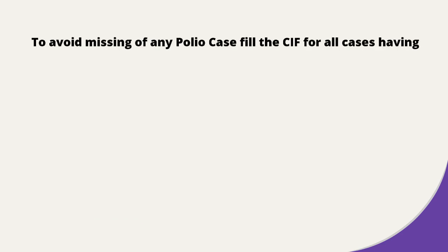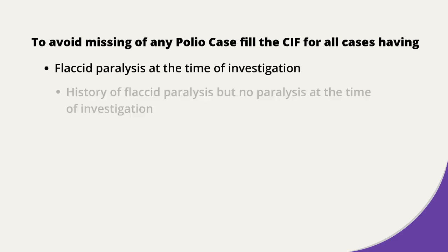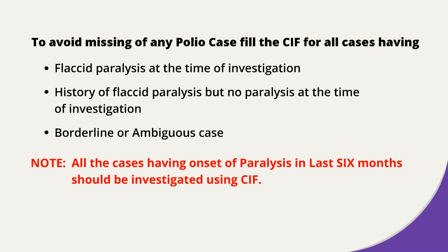To avoid missing any polio case, fill the CIF for all cases having current flaccid paralysis, history of flaccid paralysis in present illness in the last 6 months, and borderline or ambiguous signs and symptoms. All cases having onset of paralysis in the last 6 months should be investigated using the CIF.